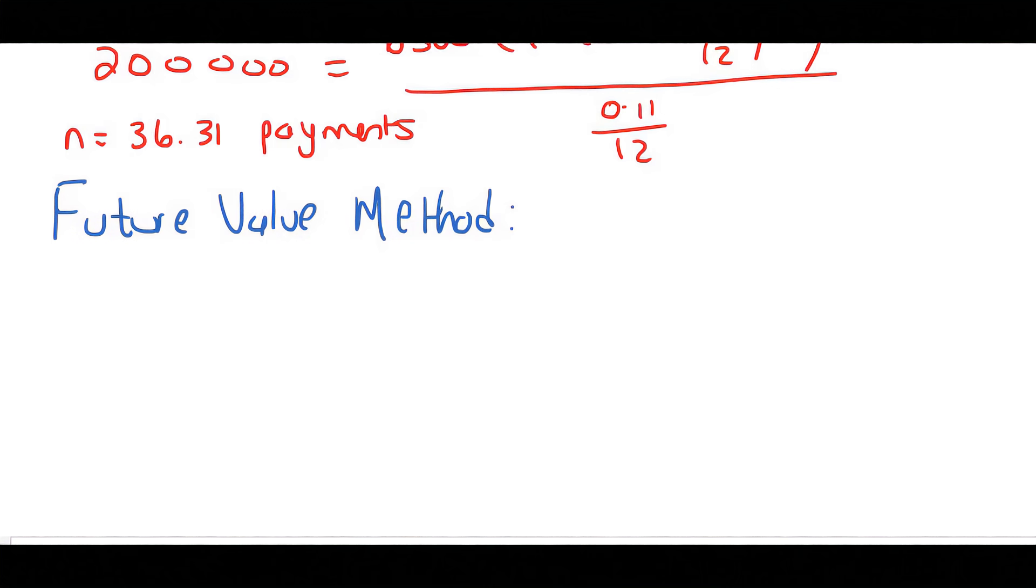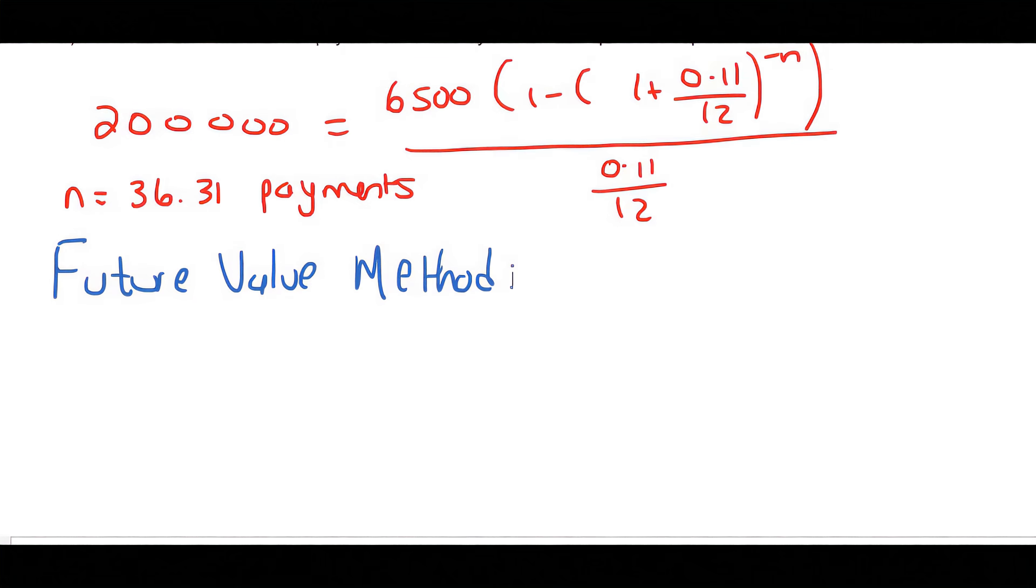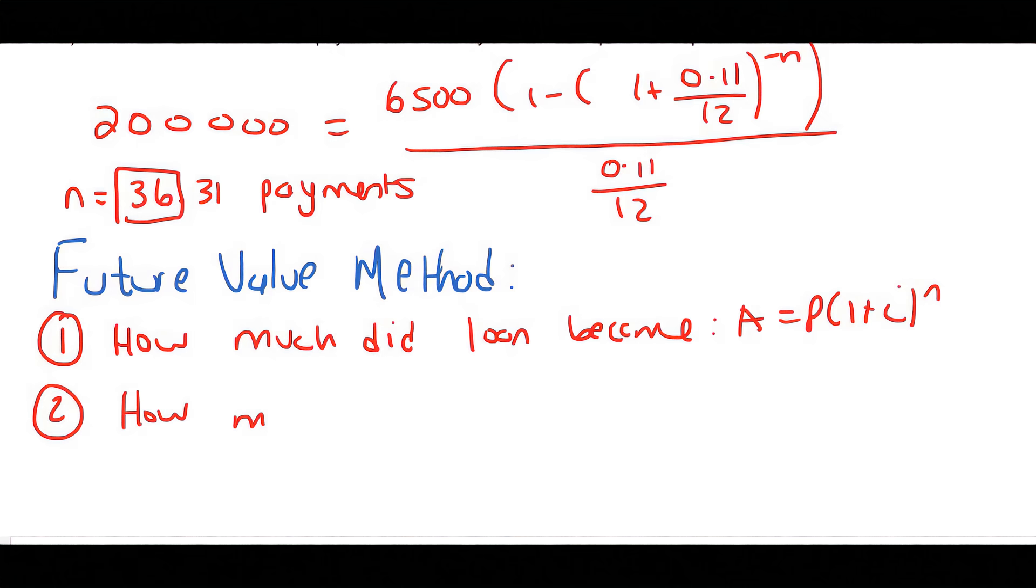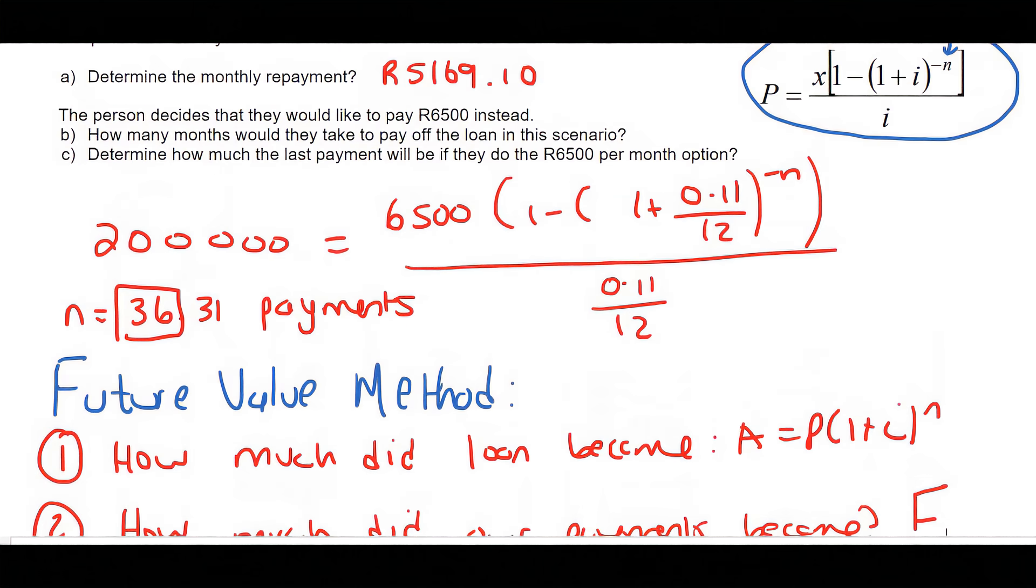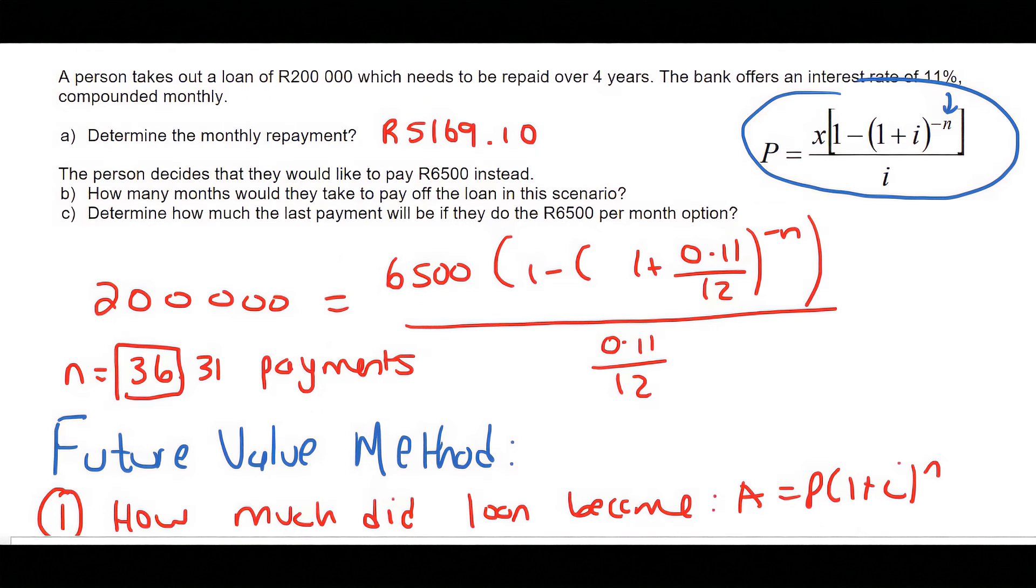Now we're going to use the future value method, which in my opinion is a better method when doing this type of question. It's a lot more simplified. It is the same as the present value method in that we need to work out the balance outstanding after the 36 payments. If you've watched my future value videos on balance outstanding, you would have seen we need two things: how much did the loan become, and how much did our payments become—to do that we use the future value formula.